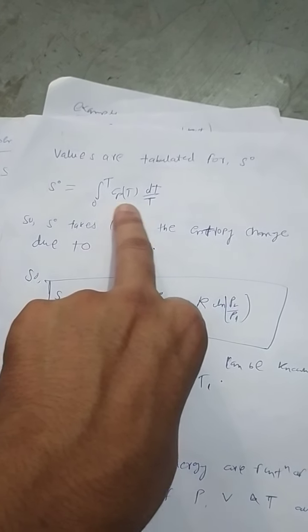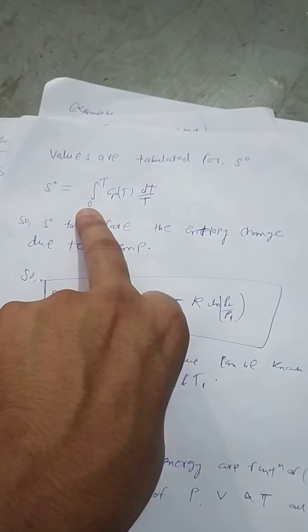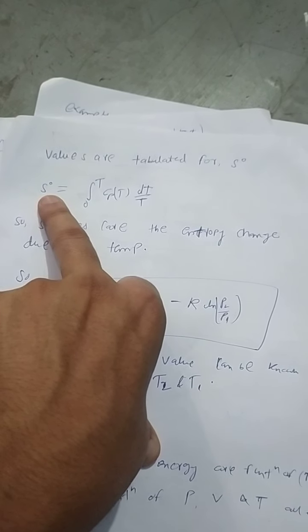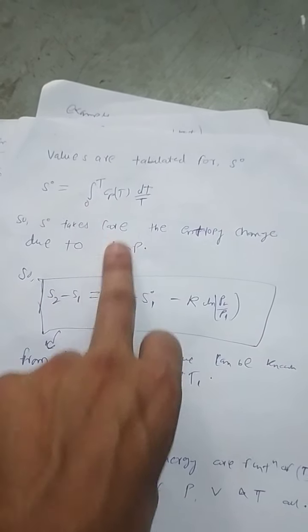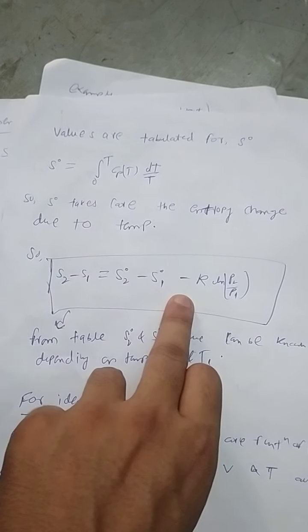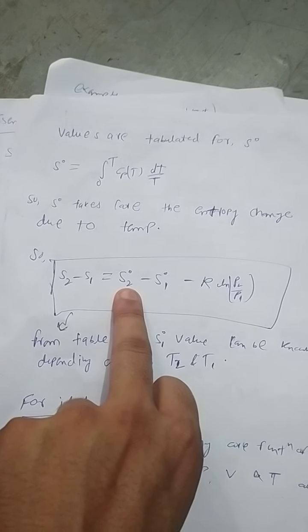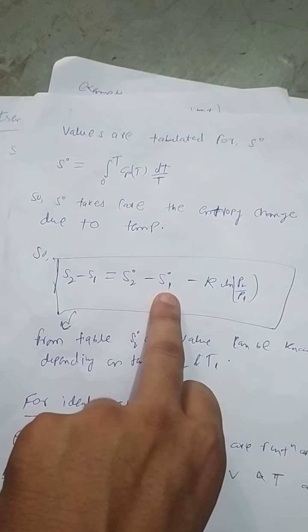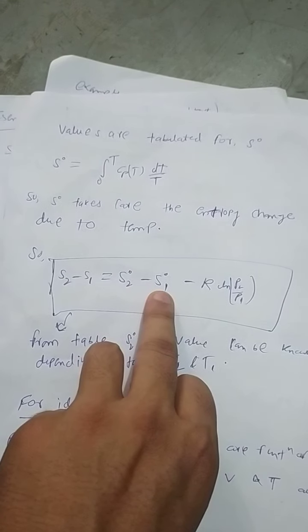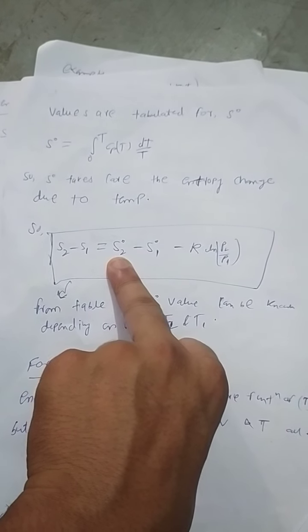It would always be zero and would give this value at T. So the above formula can be written like this: change in entropy equals s0_2 minus s0_1 minus R ln(p2/p1). So s0_1 and s0_2 can be directly seen from the table at given temperatures.